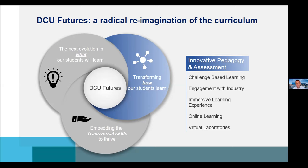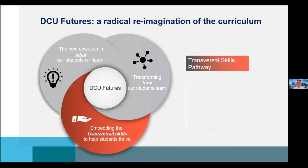Online learning is also central. When we put in the application for DCU Futures, we thought we were being quite radical saying 15 percent of student learning would be online — that was submitted about two weeks before COVID happened. A year and a bit later, we realize 15 percent was quite modest. Finally, virtual labs: since many courses are around the hard sciences, virtual labs offer students the opportunity to safely experiment — for example, mixing chemicals that would otherwise be too dangerous in a real lab.